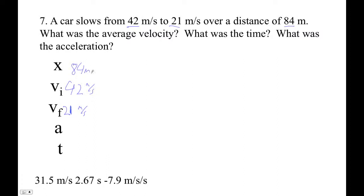And we want to know the average velocity. Well, average velocity is easy. That V with a little thing means average velocity. That's just 42 plus 21 over 2. So 42 plus 21 is 63, 63 divided by 2 is 31 and a half.